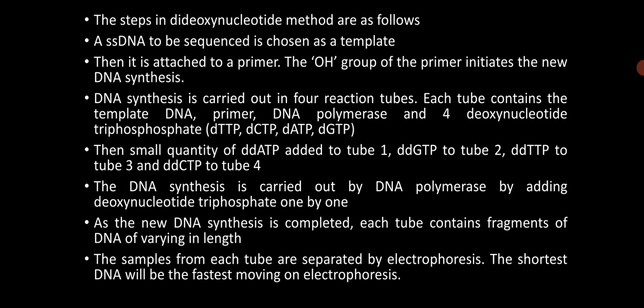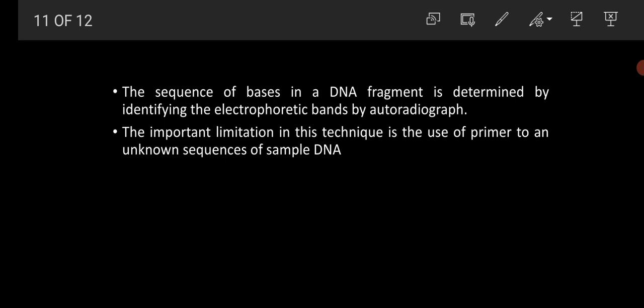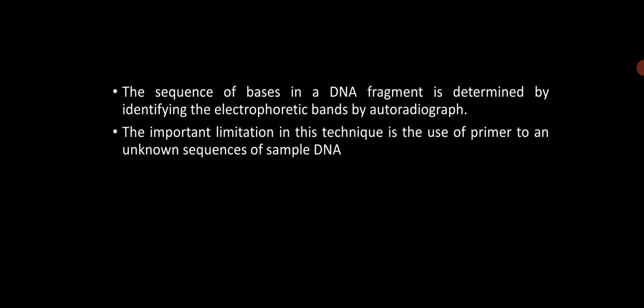The samples from each tube are separated by electrophoresis. The shortest DNA moves fastest during electrophoresis. From the bands formed, we can determine the order of the bases in the DNA sequence. The sequence of bases in the DNA fragment is determined by identifying the electrophoretic bands by autoradiograph. An important limitation of this method is the use of a primer for unknown sequences — we cannot design a primer with known sequences because the sequence order of the sample DNA is unknown. This is a disadvantage of this technique. This concludes the discussion on DNA sequencing. Thank you for watching this video lecture.